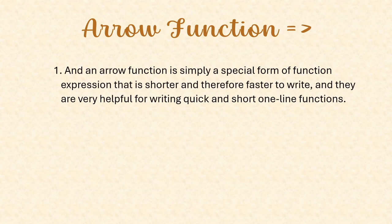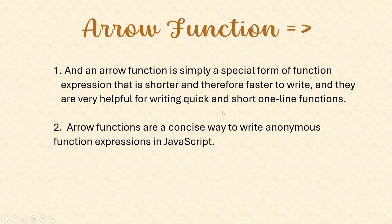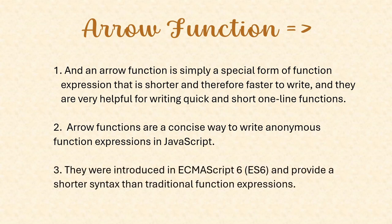So what is an arrow function? It is also a function, but it has a simpler form of function expression which is shorter and faster to write. If you want to perform a one-line operation, you can go with arrow functions. Using arrow functions, we can write anonymous function expressions in JavaScript. A function which does not have any name is called an anonymous function. This arrow function concept was introduced in ECMAScript 6 to provide a shorter syntax for function expressions.